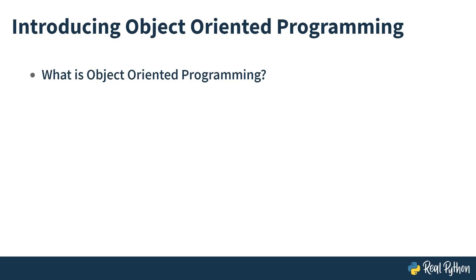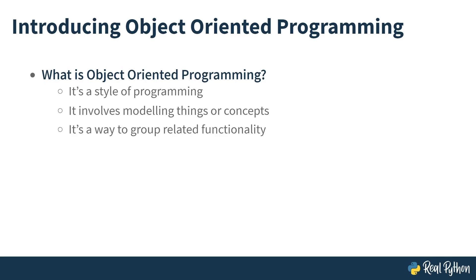Object-oriented programming is a style of programming. It involves modeling things or concepts with objects. It's a way to group related functionality together. So if you have a bunch of functions that are all related to a certain concept or thing, it's a nice way to group that together. It's a tool to structure your code and it's also a skill to practice.